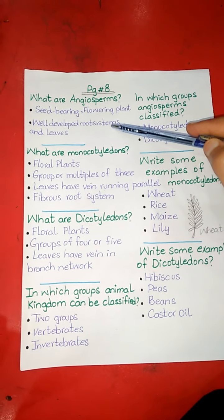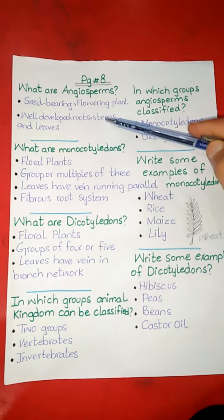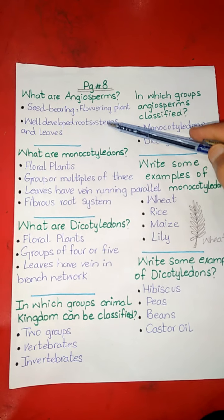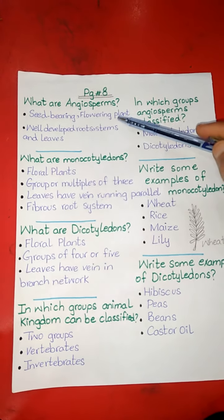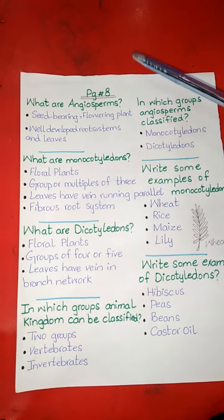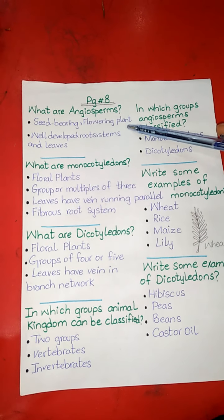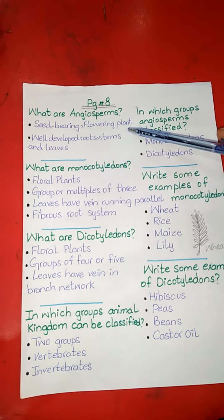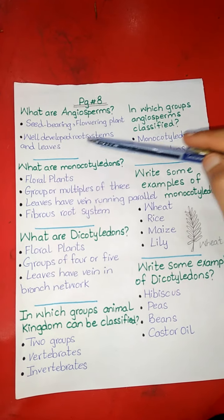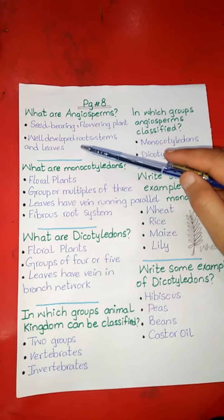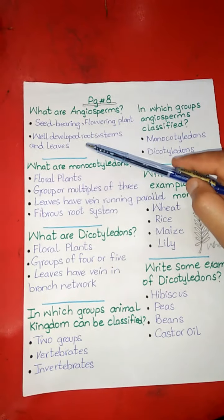The first question is: what are angiosperms? Angiosperms kya hain? Angiosperms are seed-bearing and flowering plants. And they have well-developed roots, stems and leaves.